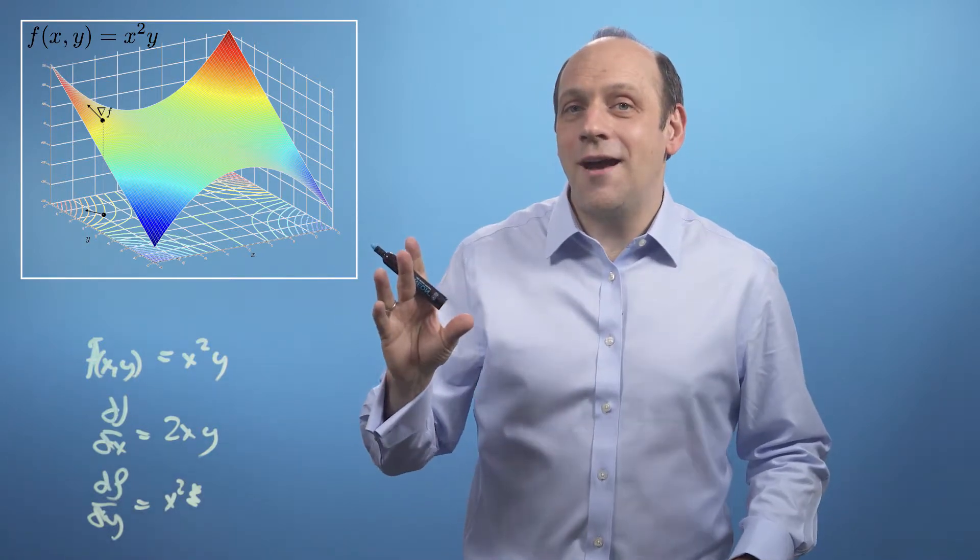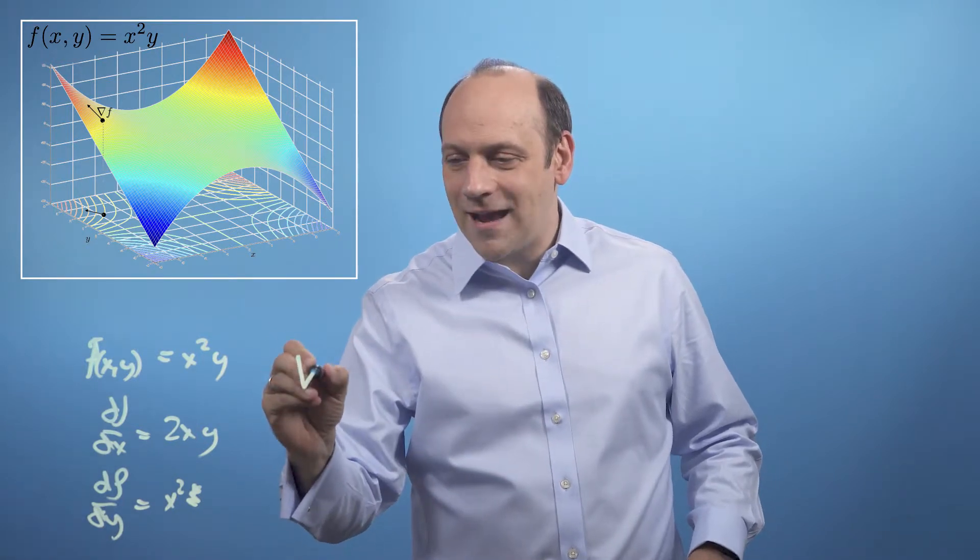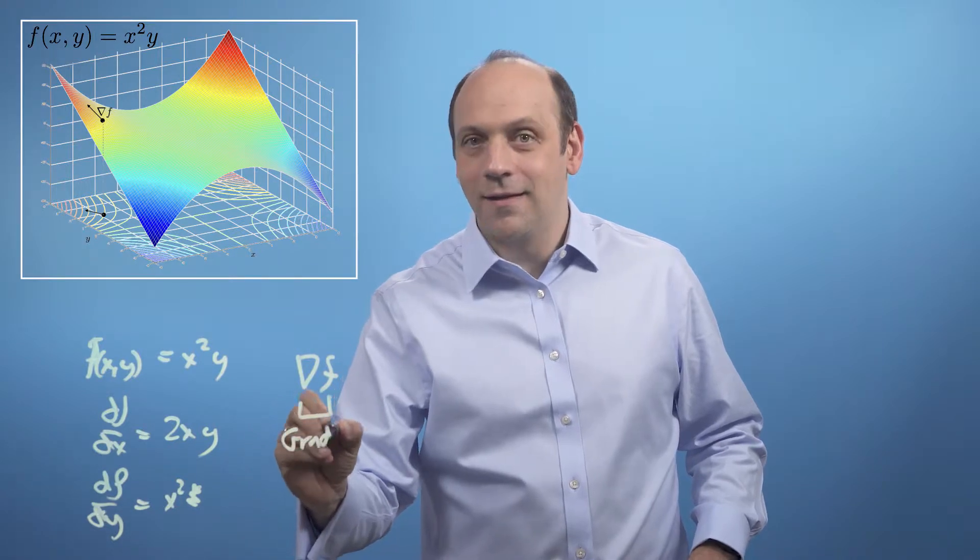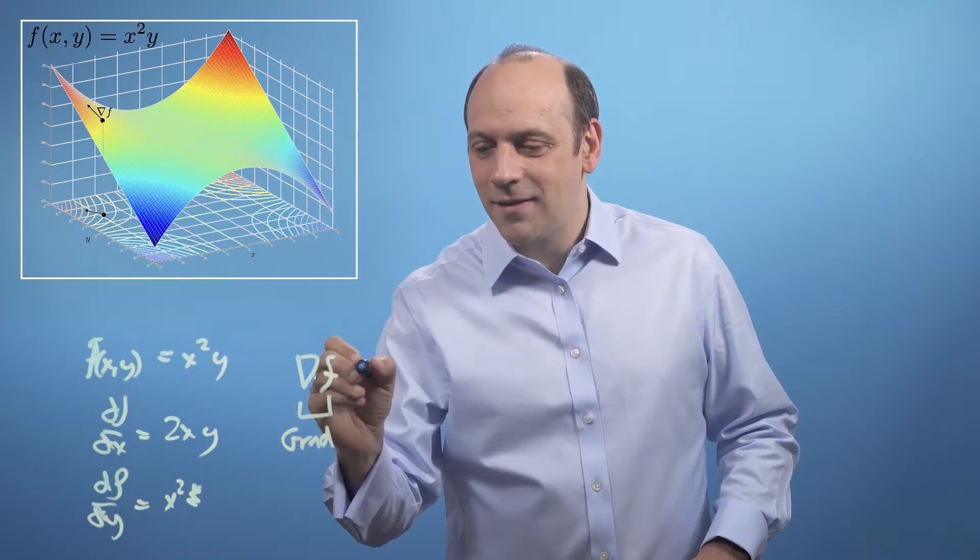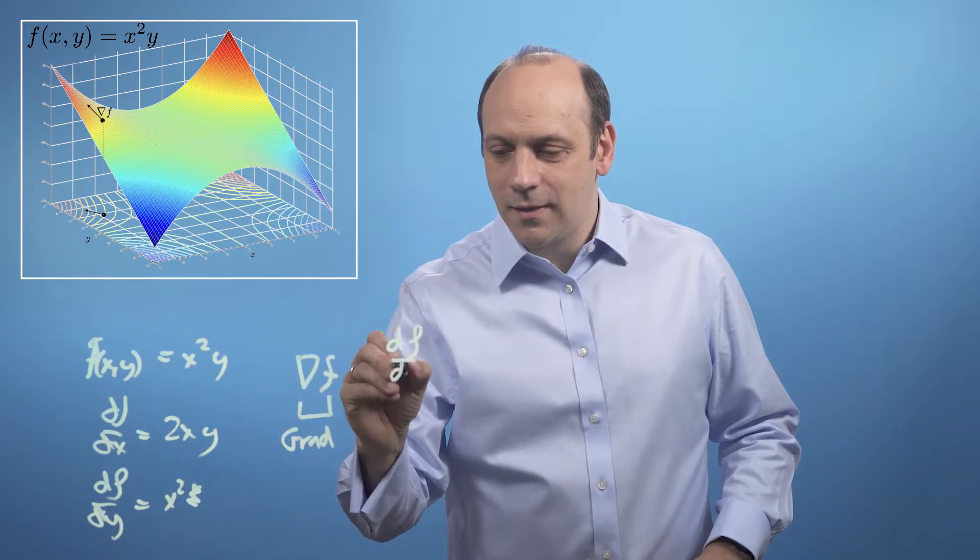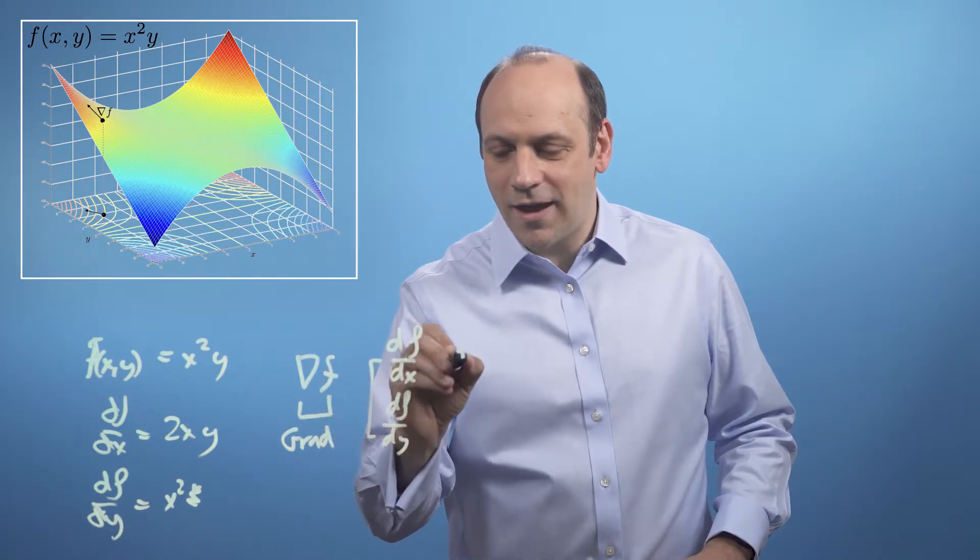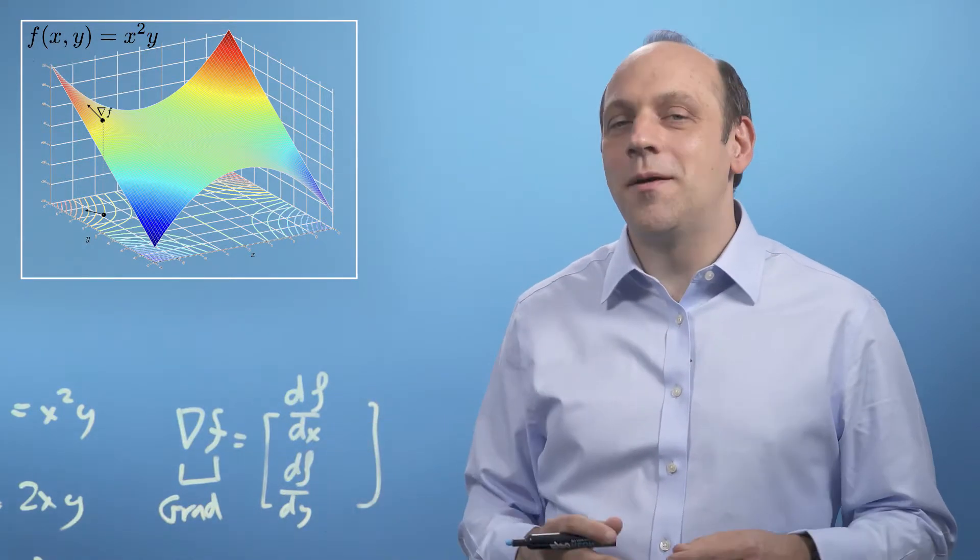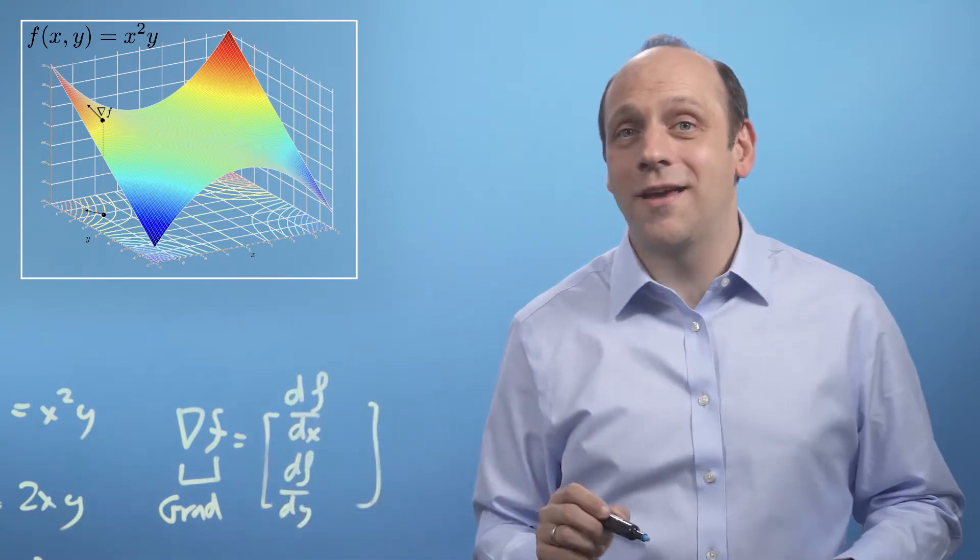Now, we can write down these two gradients in a vector, which we call the grad of f. So this guy we call grad. And this vector is just the vector where we write them down as the components of a vector. It's just the vector found by writing down df by dx and df by dy in the x and y locations of the vector.